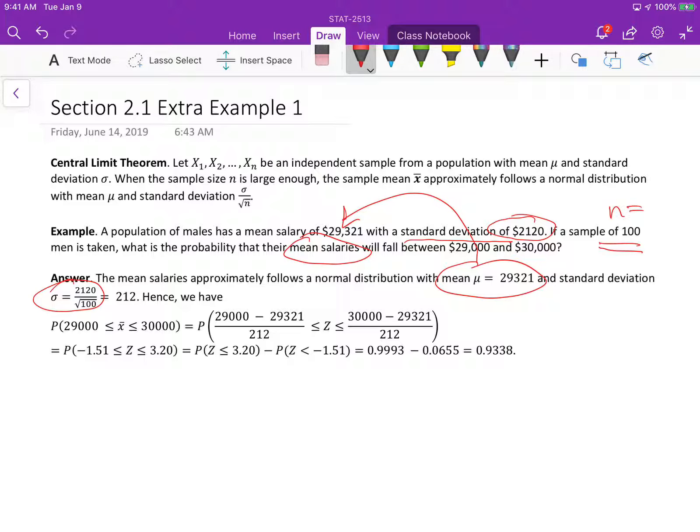this just means n equals 100. So standard deviation here is sigma divided by square root n. We do the math and get the standard deviation of x bar is 220.